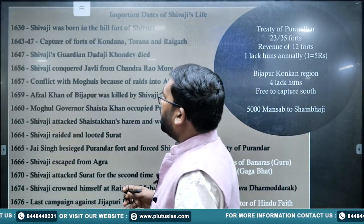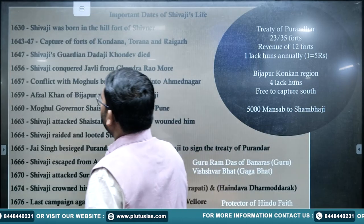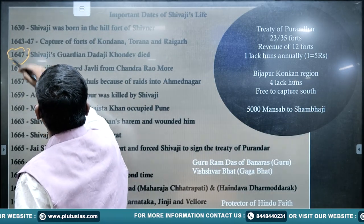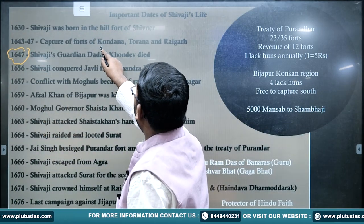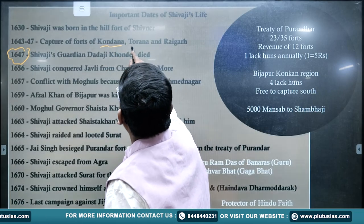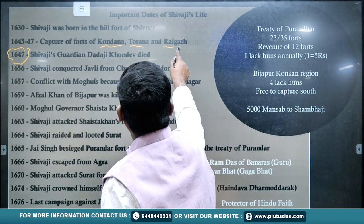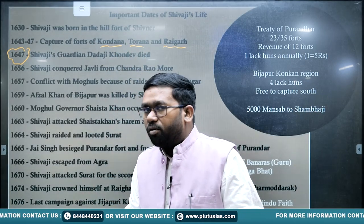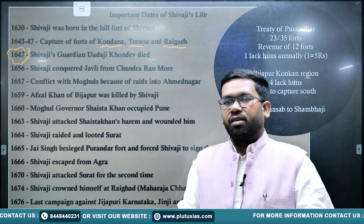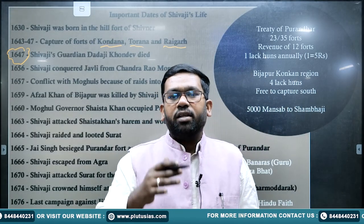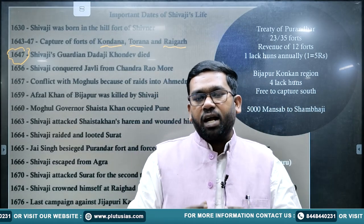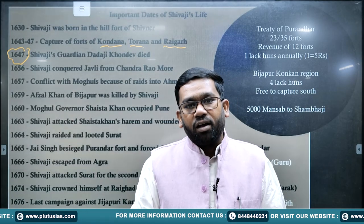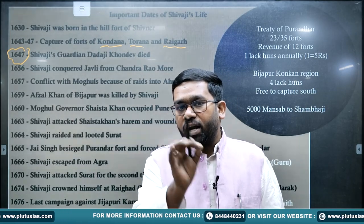By 1643 to 1647, when his guardian had died, Shivaji had captured important regions up to Kondana, Toran, and Raigarh. He became very influential. Within the next ten years after his guardian died, he became very powerful in the Deccan part of India.